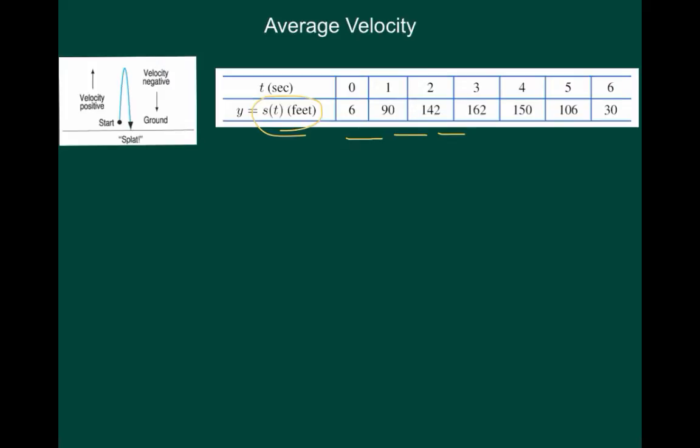Now, what happens in between the third and the fourth? It must have reached a maximum, and it starts coming down. So, the change in the position was 12 feet, but it's going down for the first time. And then, as we move from the fourth to the fifth, it's moving 44 feet. And then, from the fifth to the sixth second, it moves quite quickly. It's at 76 feet in that last second.